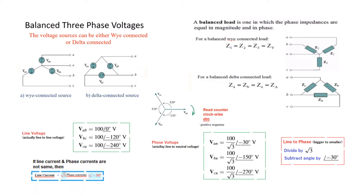In a delta circuit, the line current coming in divides into two paths, so line current and phase current are not the same. In that case, line current equals root 3 times the phase current, with an angle shift of minus 30 degrees. This is another important formula to keep in mind.